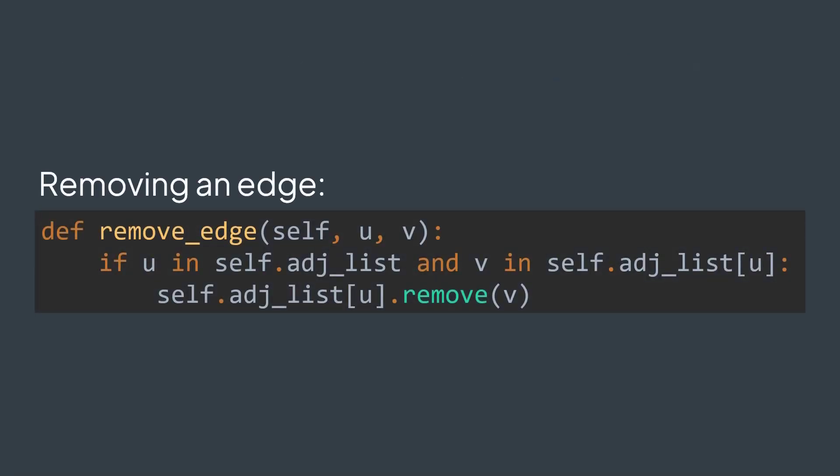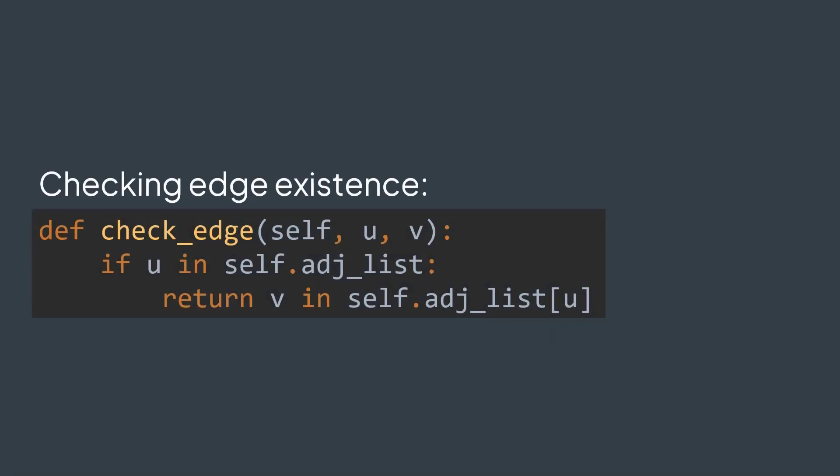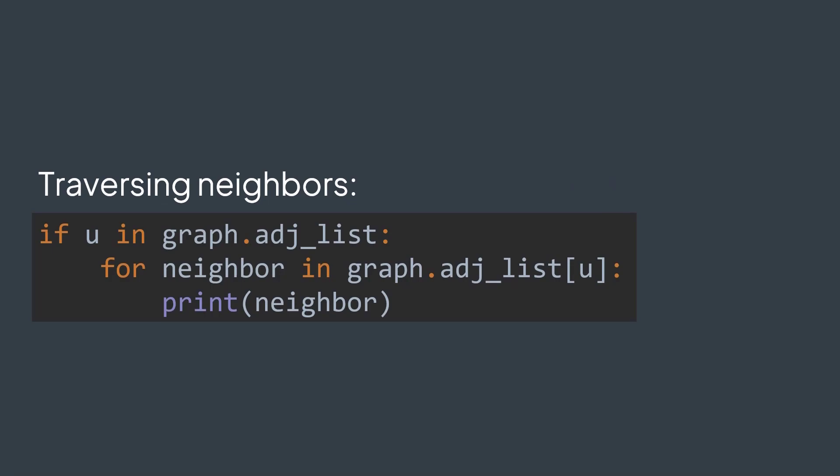Now for removing an edge that goes from u to v, we just need to remove v from neighbors of u. If u exists and v is in adj_list[u], we remove v. And if it's an undirected graph, we also do the opposite: we remove u from neighbors of v. Next operation: checking if there is an edge from u to v. For that, if u exists, we just check if v is in neighbors of u. Next operation: traversing neighbors of a vertex u. To do so, if u is in the graph, we just traverse adj_list[u]. Remember that the value in the adjacency list contains the neighbors of the key.